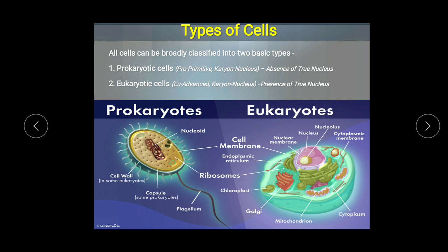Apart from prokaryotes, the eukaryotes are highly developed, advanced, complex cells. They have a true nucleus — in prokaryotes there is a nucleoid, but in eukaryotes there is a nucleus which is bounded by a nuclear membrane — a double membrane surrounding the nucleus.